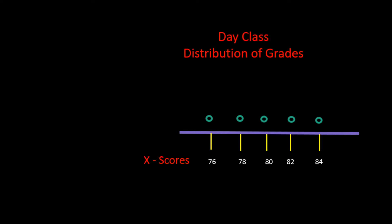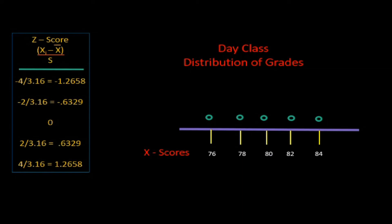Let's see what the z-scores look like on a graph. Here's a graph of the original data with grades 76, 78, 80, 82, and 84 — where 80 is in the middle and is the mean grade. Now let's look at the converted scores. We calculated a z of minus 1.265 for the x-score of 76, and minus 0.6328 for the x-score of 78, and so on. Using the z-score formula, we took every x-score, subtracted the mean, and divided by s to convert to a z-score. So an x-grade of 76 is converted to a standardized z-score of minus 1.2658.